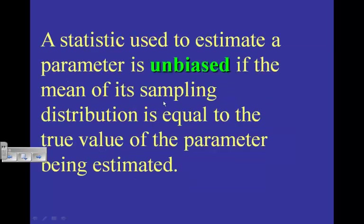We've seen this definition before — it's very important, we've seen it about three times now. A statistic used to estimate a parameter is called unbiased if the mean of its sampling distribution is equal to the true value of the parameter being estimated. So if the mean of the sampling distribution equals the true population parameter, we call that statistic unbiased.